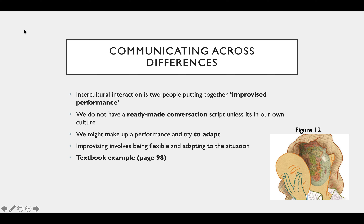Intercultural interaction is two people putting together an improvised performance. When we are in different intercultural contexts, we don't really know exactly how to act. Therefore, we have an improvised performance with a ready-made conversation script, and we try to adapt and improvise. For example, if we go to a Japanese restaurant where you need to sit on the floor and use chopsticks, we might try to curb our behavior even if we don't know exactly what to do. We try to adapt and be flexible and respectful in that sense.